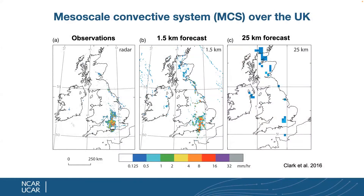These results are not unique to the central US. For example, from the UK Met Office: the left picture shows a radar image of an organized convective system over southern England. You can see how the 1.5-kilometer forecast captures it, while the 25-kilometer forecast misses the event completely. This is a fairly robust improvement seen across different models and regions — kilometer-scale modeling systems produce much better organized and single-cell convection than coarse-resolution models.